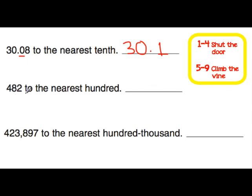482 to the nearest hundred. Let's underline the hundreds place: 1s, tens, hundreds. Looking at the number to the right of that underlined number, we have an 8 — so we're climbing the vine. That 4 is turning to a 5, and everything else that follows is a 0, giving us 500.